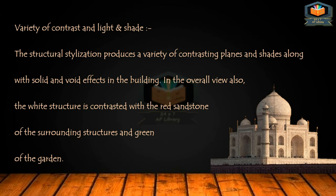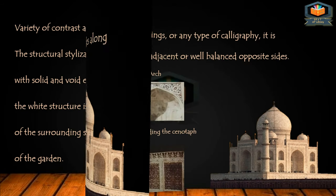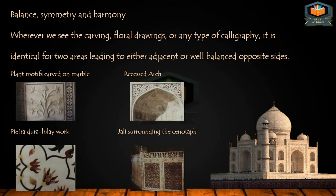Variety of contrast and light and shade: the structural stylization produces a variety of contrasting planes and shades along with solid and void effects in the building. In the overall view the void structure is contrasted with the red sandstone of the surrounding structures and the green of the garden. Balance, symmetry and harmony: wherever we see the carving, floral drawings or any type of calligraphy, it is identical for two areas leading to either adjacent or well-balanced opposite sides.